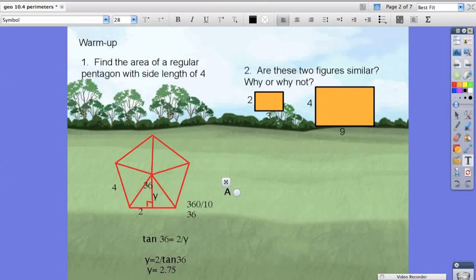you get 2.75 is our height. So now we're going to find the area of our right triangle, which is one half the base, which is two times the height, which is 2.75.